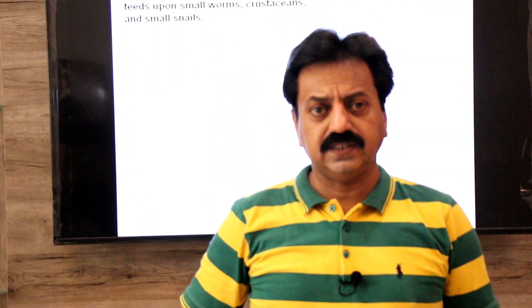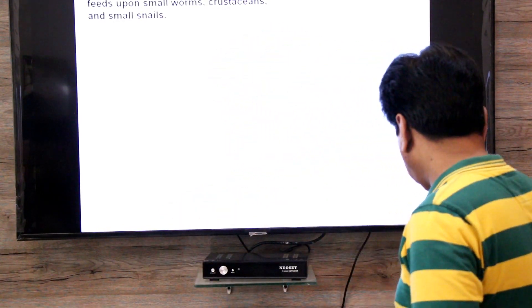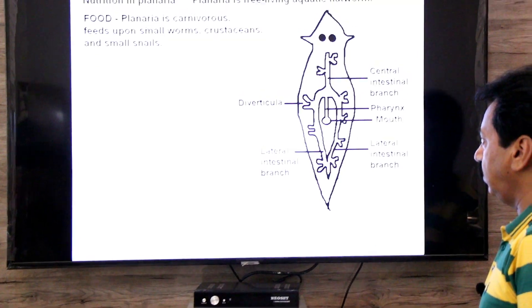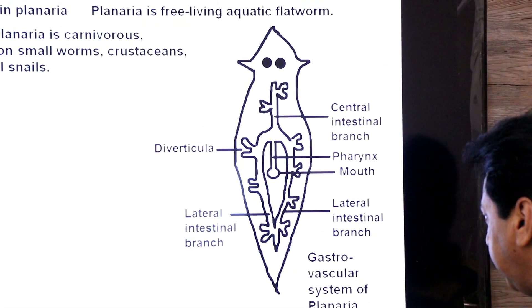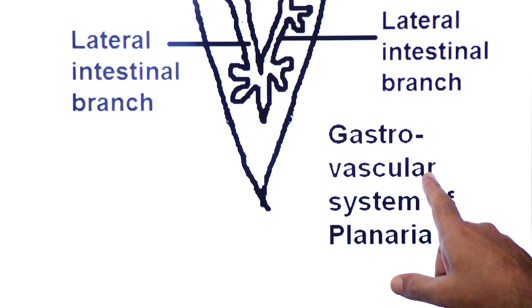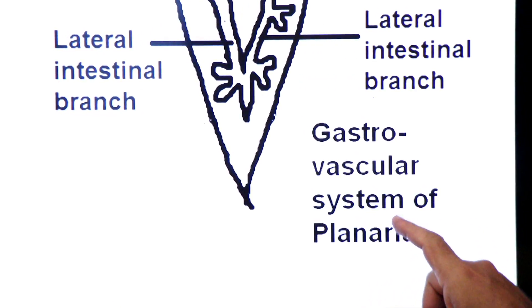Dear students, planaria's body has no true circulatory system — it is lacking blood. The system we are going to study today is called the gastro-vascular system. This is the diagram showing the gastro-vascular system of planaria.